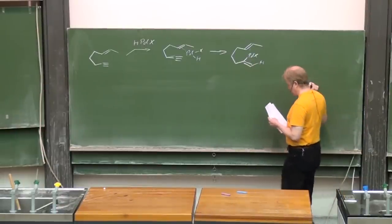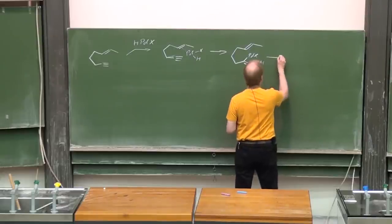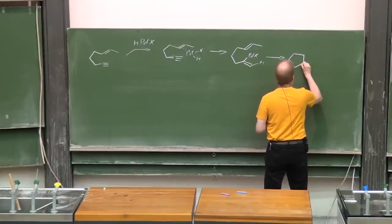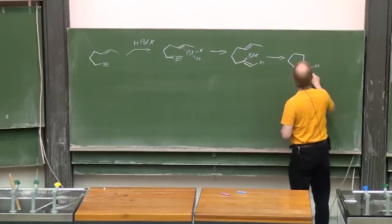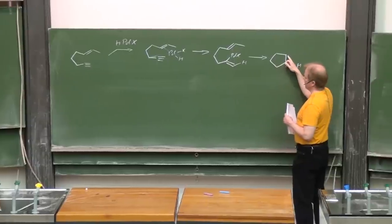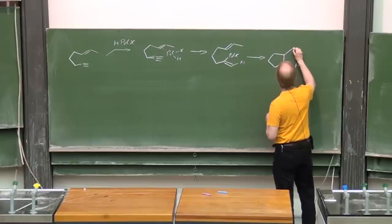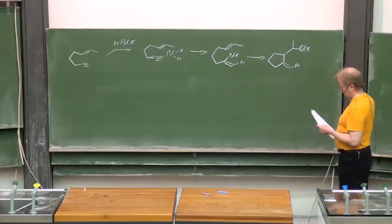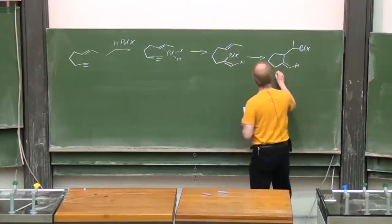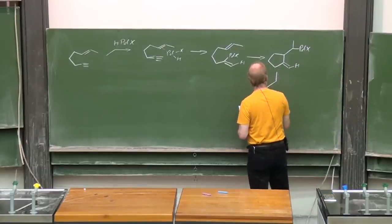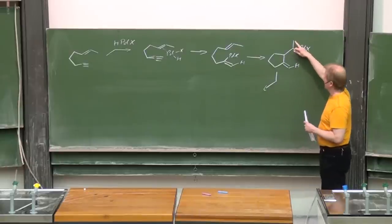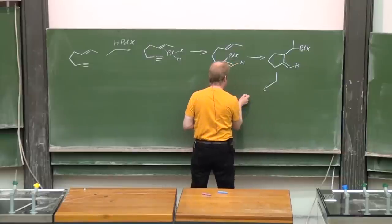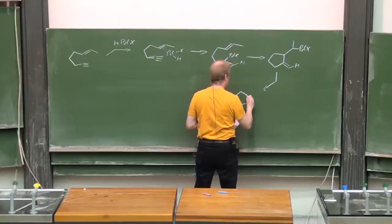This palladium(II) is highly electrophilic and will coordinate to the acetylenic moiety and the olefin. Therefore this pre-coordination will of course influence, reduce the regional selectivity of the hydropalladation step. Now a carbopalladation will give that five-membered carbocycle.